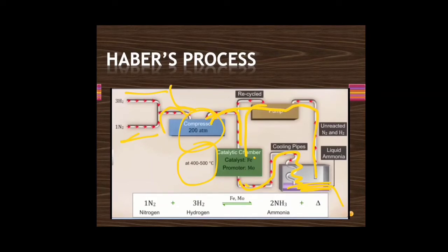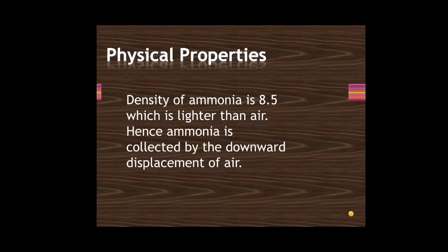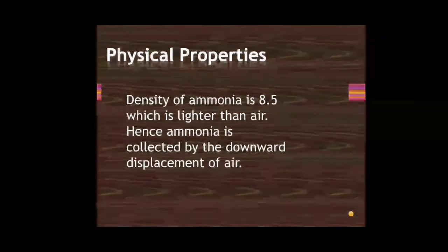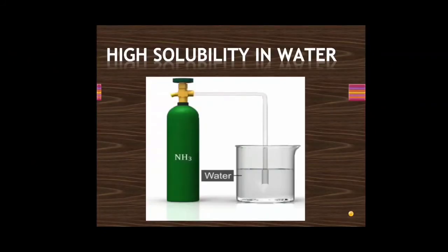The physical properties of ammonia: it is a colorless gas with a characteristic pungent odor. The density of ammonia is 8.5, which is lighter than air — the density of air is 14.4. This is why ammonia is collected by downward displacement of air.